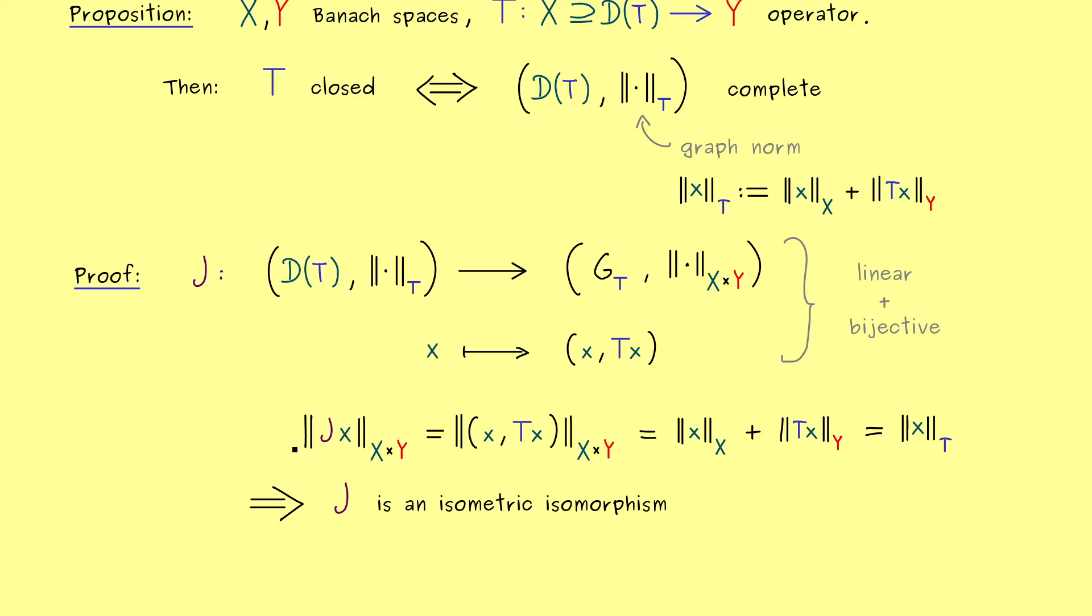Okay and now the important conclusion here is that the map J translates every information from the left hand side here to the right hand side and J inverse does it the other way around. Roughly speaking you could just say the normed spaces left and right are exactly the same.